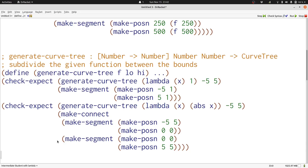If we want to generate the curve tree for the function that just produces the absolute value, again between minus five and five, we're going to consider the point minus five which produces five, zero which produces zero, and then another segment that starts at zero zero and goes to five five. That will produce a v-shaped curve.